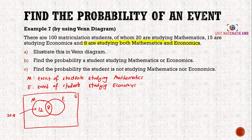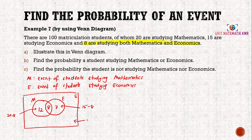For the economics circle, the question says 15 are studying economics, so we put 15 minus 8, which is 7. Now, there are 100 matriculation students total, so outside both circles — students who study neither mathematics nor economics — we calculate 100 minus 12 minus 8 minus 7, which gives 73. So this completes the Venn diagram for part one.